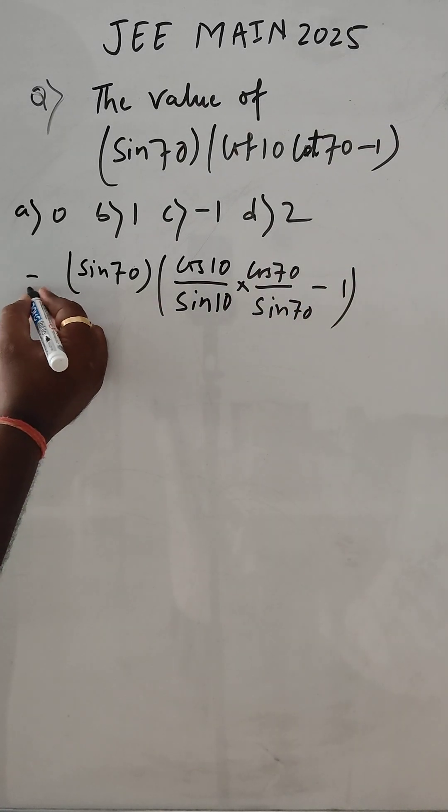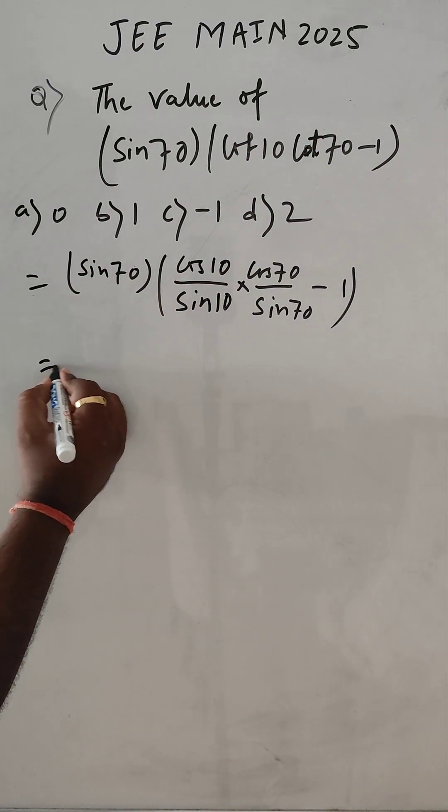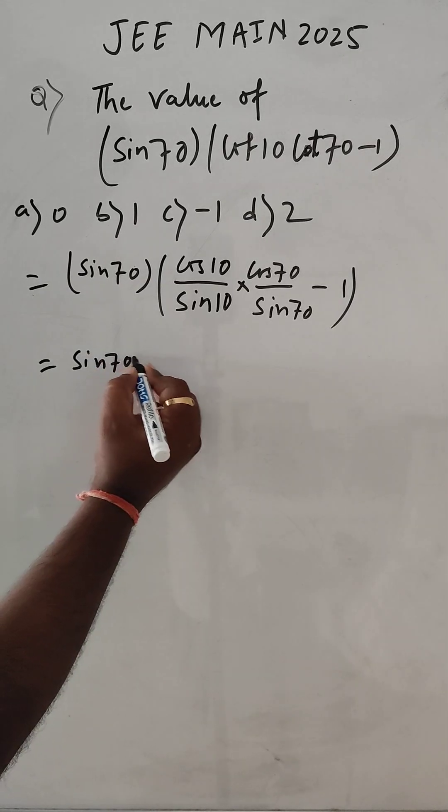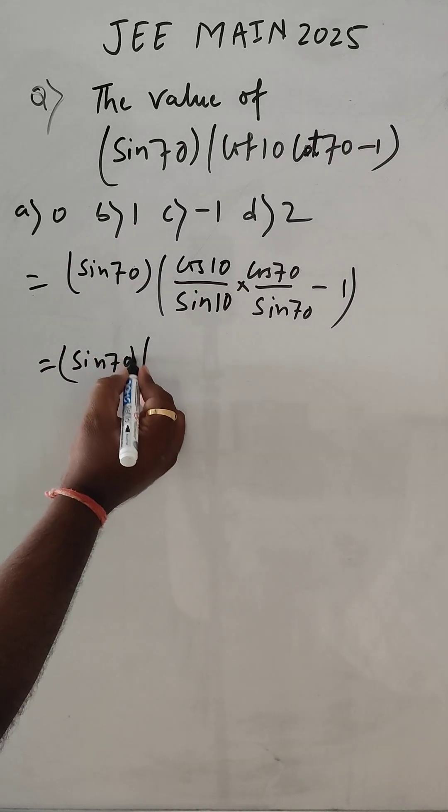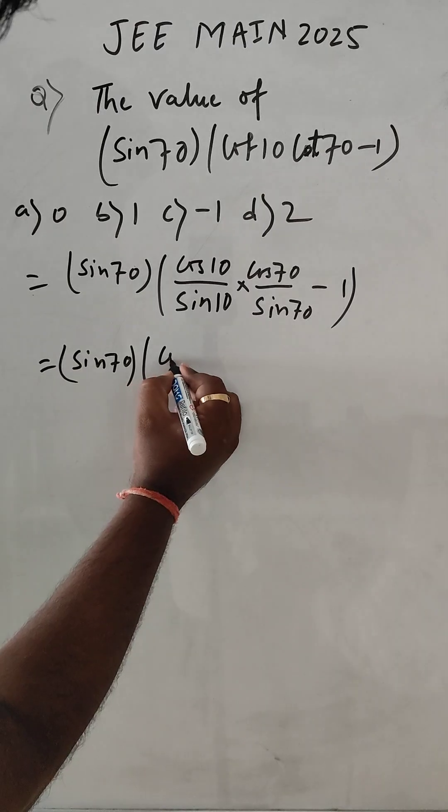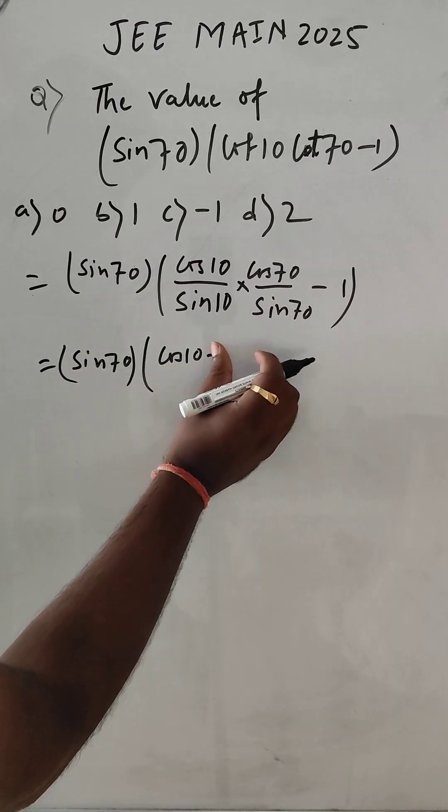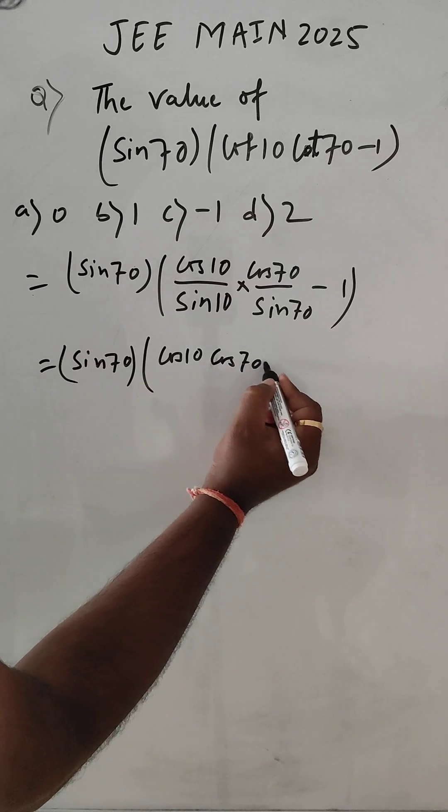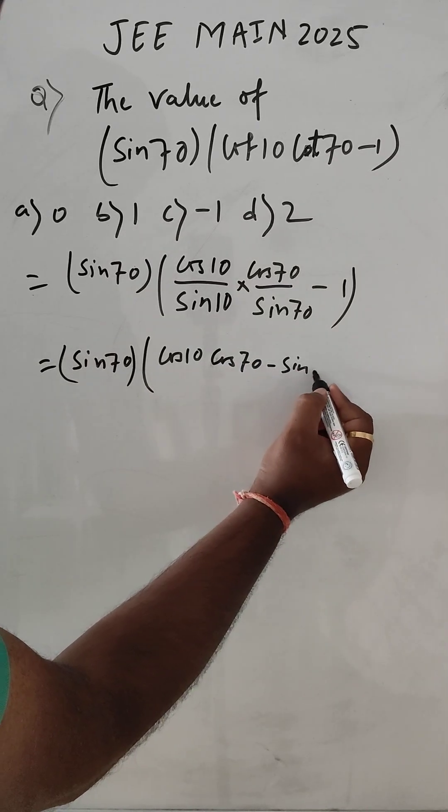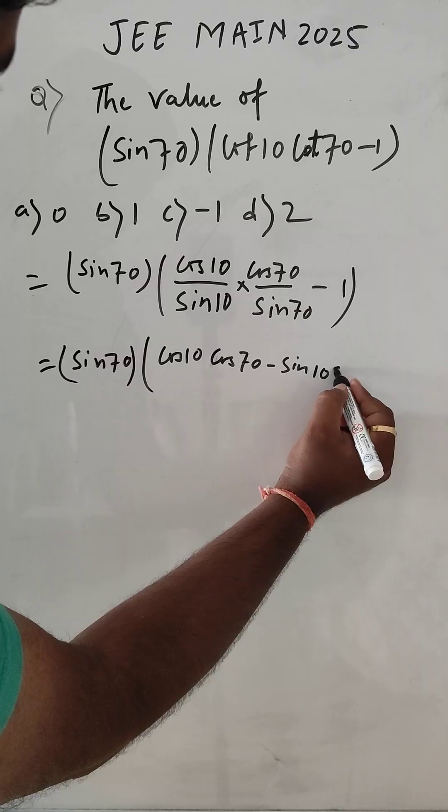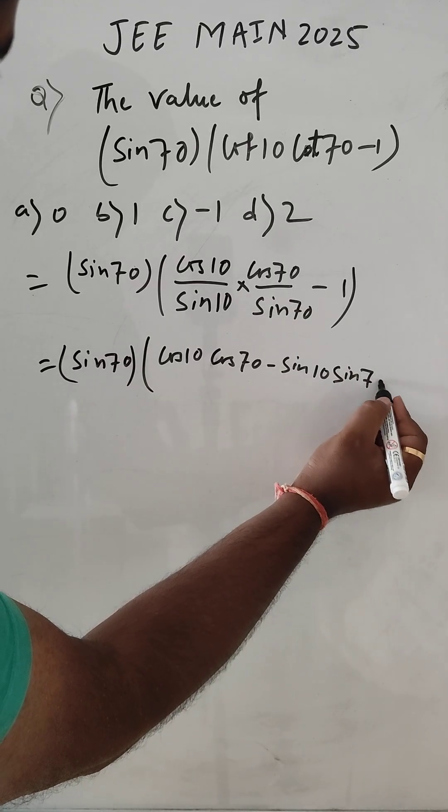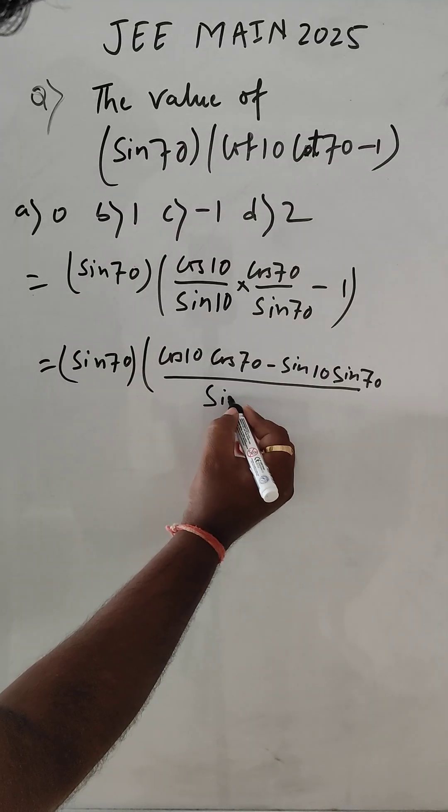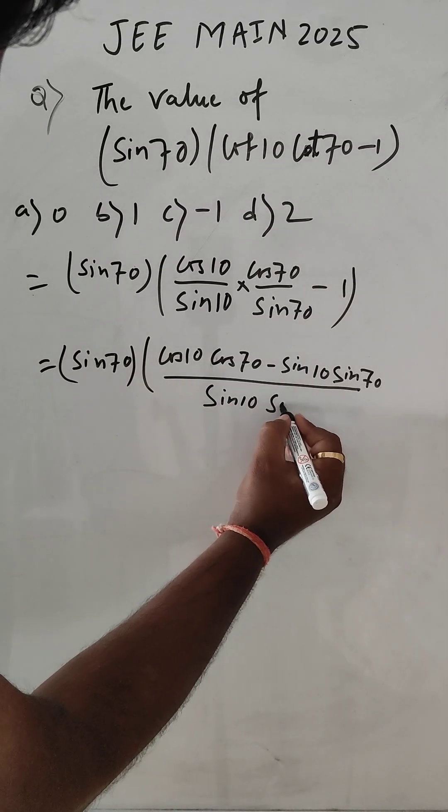This like this we can write. Now here sin 70, and we can write cos 10 into cos 70 minus sin 10 into sin 70, and here divided by sin 10 sin 70.